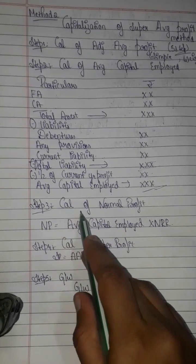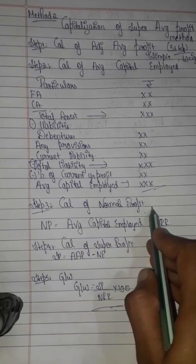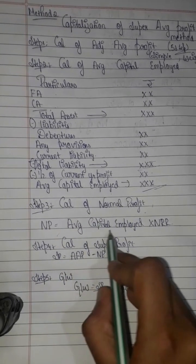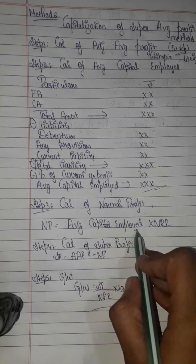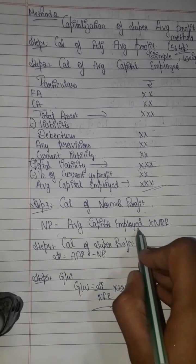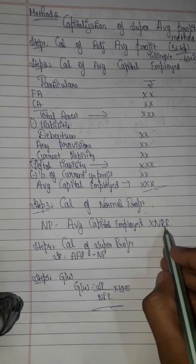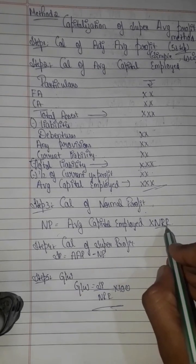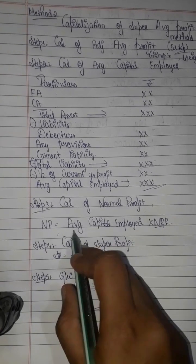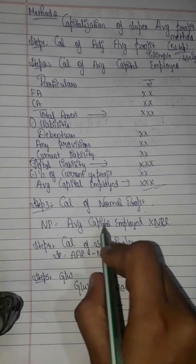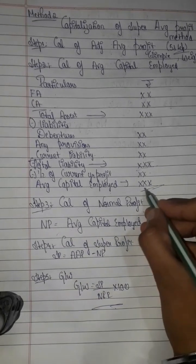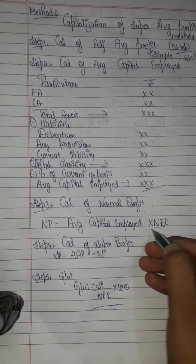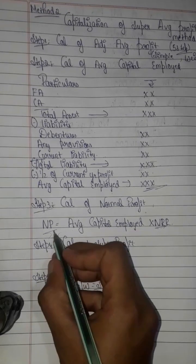Step 3 is the calculation of normal profit. Normal profit is calculated as: average capital employed multiplied by the NRR percentage given in the question. That result is your normal profit.